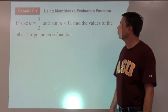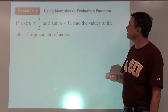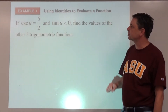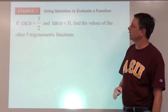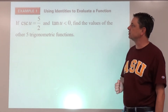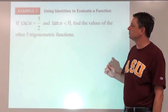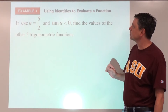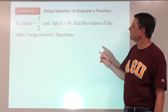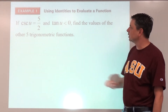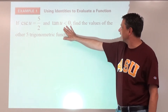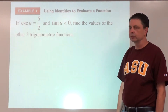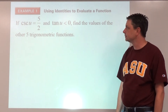Example one: we're going to use identities to evaluate a function given some information. We know that cosecant of u is five-halves and tangent of u is less than zero — meaning negative. Find the values of the other five trig functions.